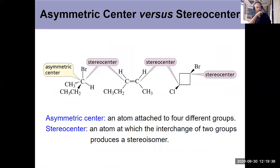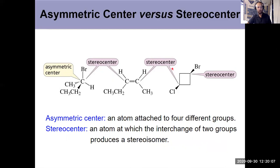We need to talk about stereoisomers and stereocenters, because that's a possible area of confusion. If we have a carbon atom attached to four different groups, that's called an asymmetric center, and all asymmetric centers are stereocenters. But the definition of a stereocenter is an atom where if you switch two groups, it produces a stereoisomer — so we also see stereocenters on cis-trans or EZ carbons. That asymmetric center is always a stereocenter, but not all stereocenters are asymmetric centers.